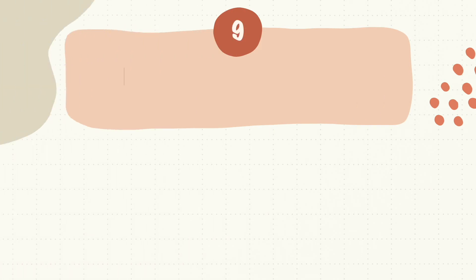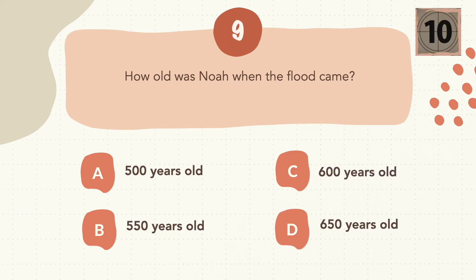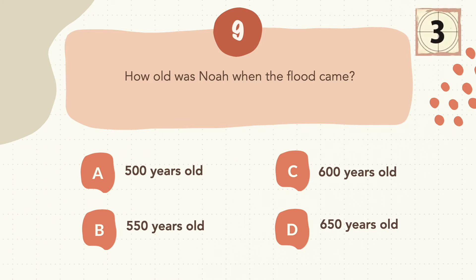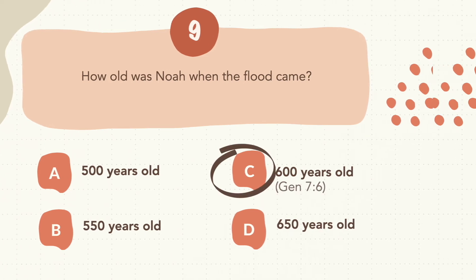Question 9: How old was Noah when the flood came? The correct answer is C, 600 years old.